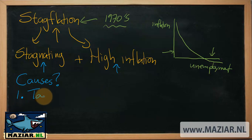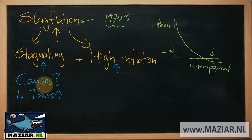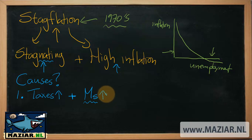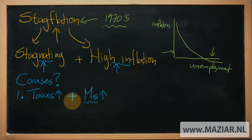In scenario one, the government increases taxes — maybe to clear a budget deficit. When taxes increase, this slows down economic activity, leading to a stagnating economy. If at the same time they also print more money — increasing the money supply, perhaps again to cover a budget deficit — when money supply goes up significantly, it will create high inflation. When you have both of these together, you will have stagnation plus high inflation: stagflation.